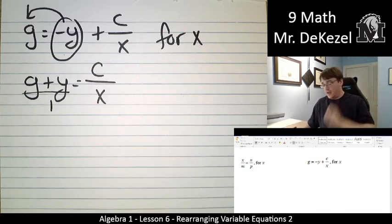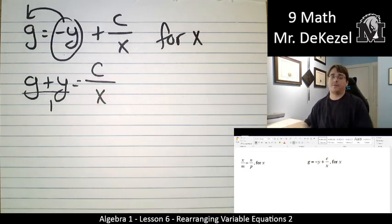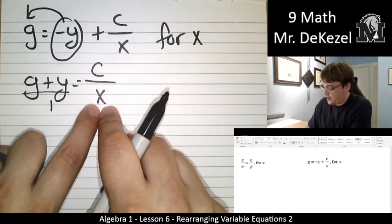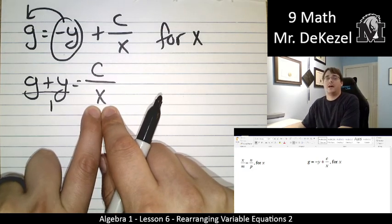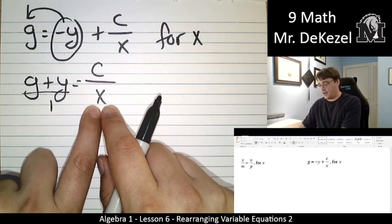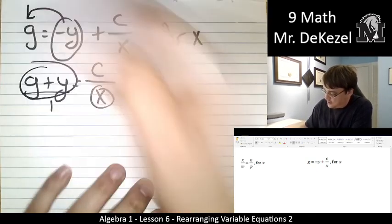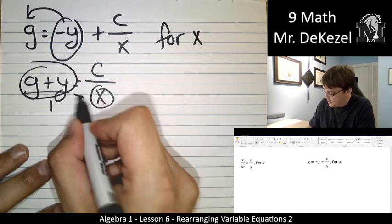OK, and what we're going to do is to keep everything the same in this equation is when we have something on the bottom of this side of the equation that we want to isolate for, we can take the bottom on this side and the top on the other side and switch them.